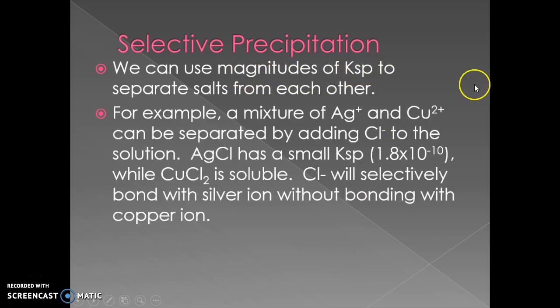For example, you've got a mixture of silver ions and copper ions. We are going to separate them with chloride because the substance with the smaller Ksp value will precipitate out first. The number of chloride ions you need to get the silver chloride precipitate is going to be smaller than the amount of chloride you need to get copper to precipitate out.